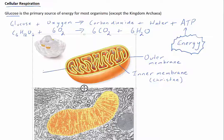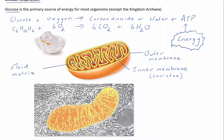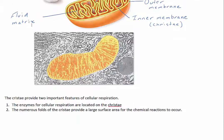The cristae provide two important features of cellular respiration. One, the enzymes for cellular respiration are located on the cristae. And two, the numerous folds of the cristae provide a large surface area for the chemical reactions to occur.